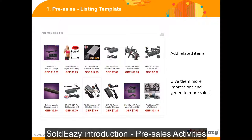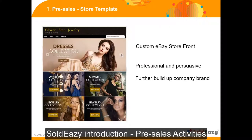Also, you can add related or recommended items in your template. For example, if you are selling a mobile phone, it's very likely that customers would consider mobile phone accessories shown in the same listing — they get more impressions and thus more chances to be sold. You can also refine your storefront, a place where buyers can view your listings in one page. They can choose the store category you set to view specific items. If the storefront is well organized, buyers will love to spend more time in your store.